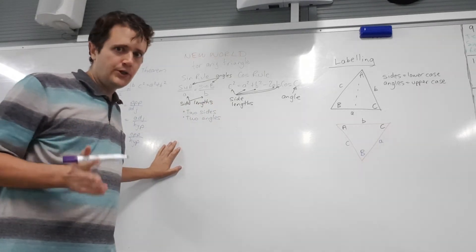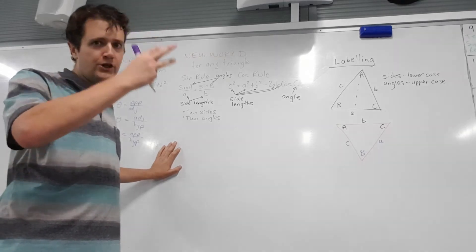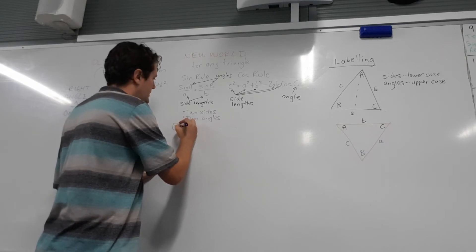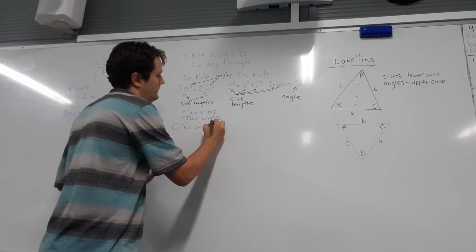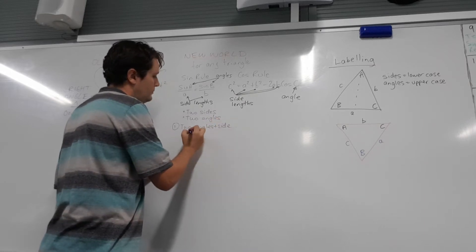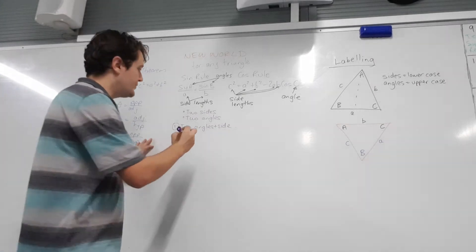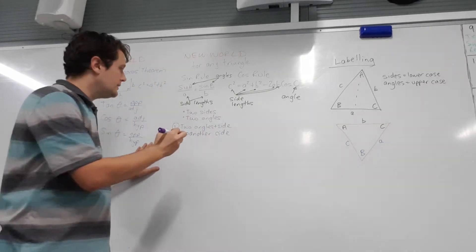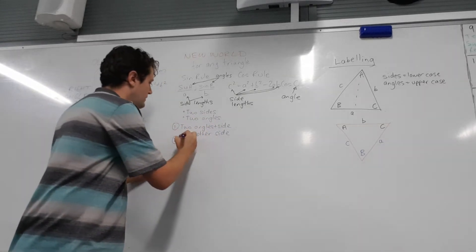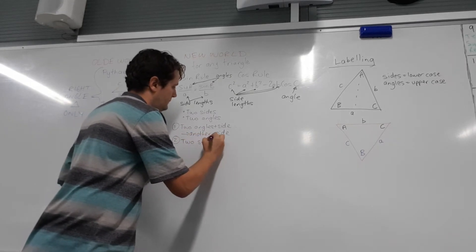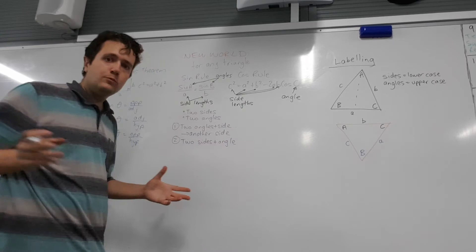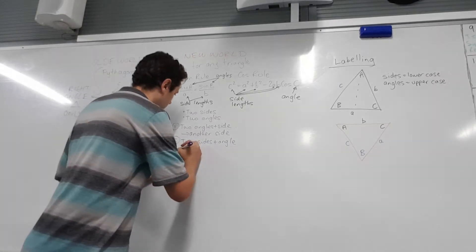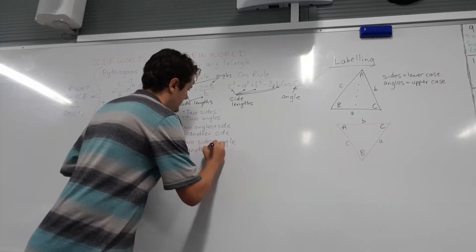There are two possible uses for the sine rule. First use: if we have two angles and a side, we can find the fourth bit of information, which is another side. Second use: instead of two angles, we could have two sides and one angle. In that case, the missing thing we can work out would be another angle.